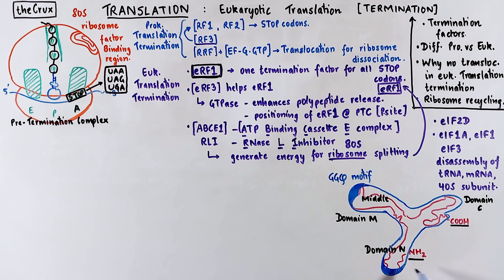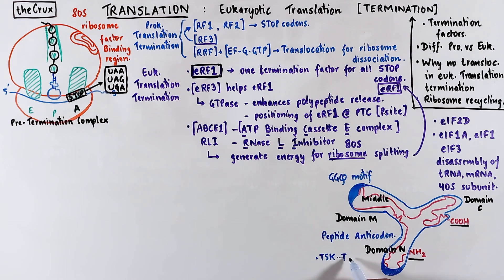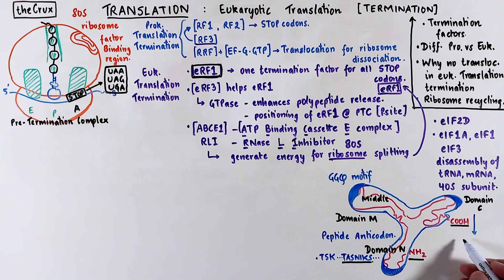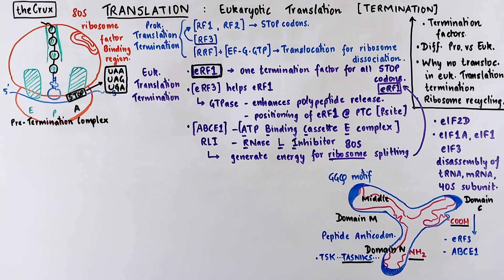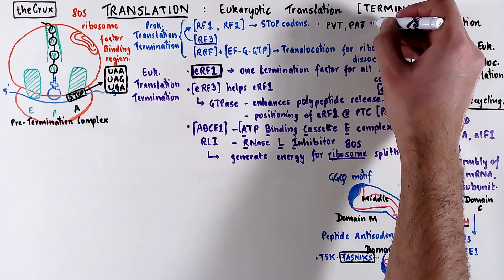Domain N has the peptide anticodon, which we also talked about in prokaryotic termination. But in domain N, the motifs responsible for stop codon recognition are different from prokaryotes — they are TSK and TASNIKS, and some others, but it's TASNIKS that you need to keep in mind. Domain C has a bunch of binding sites responsible for binding to release factor 3 and the ABCE1 complex. The TASNIKS motif is very different from the stop codon recognition motifs in prokaryotes, where we saw PVT, PAT, SPF, and SPV motifs.